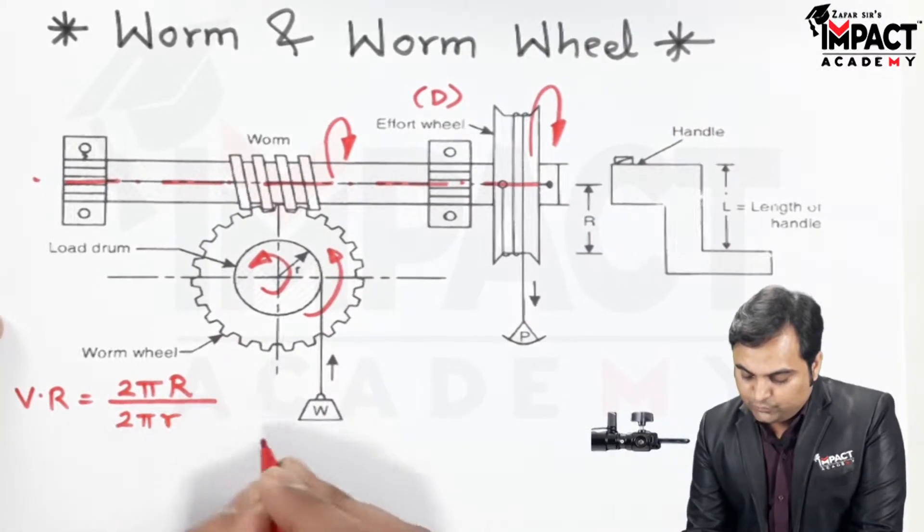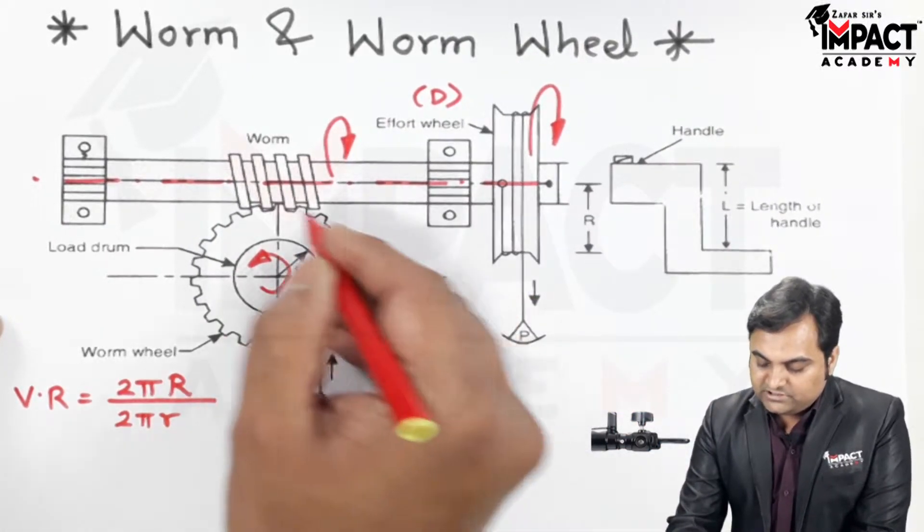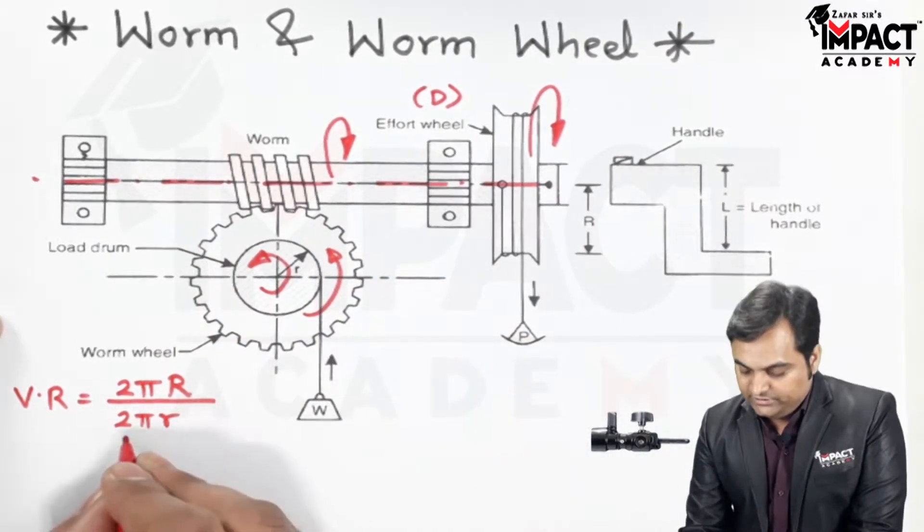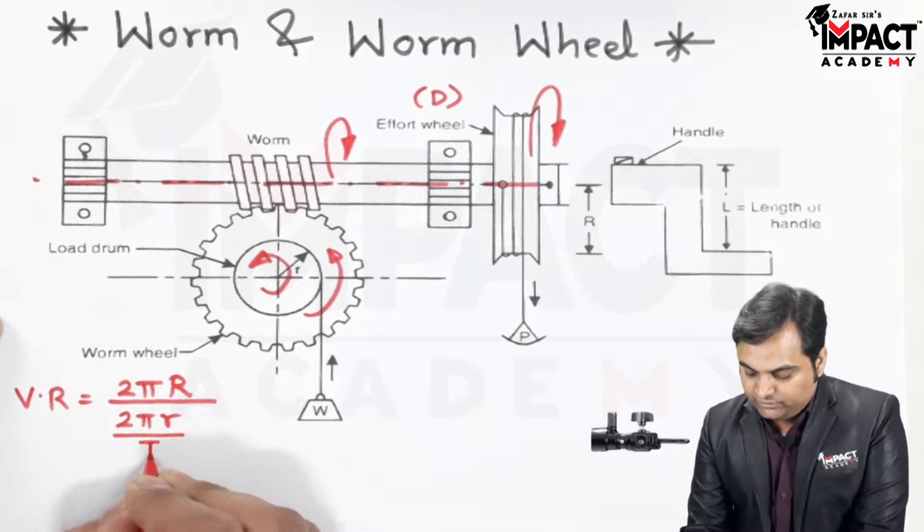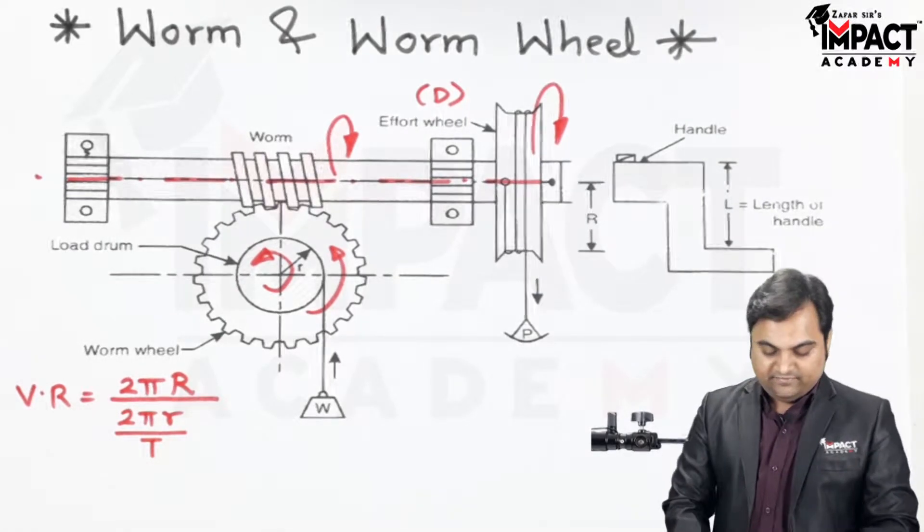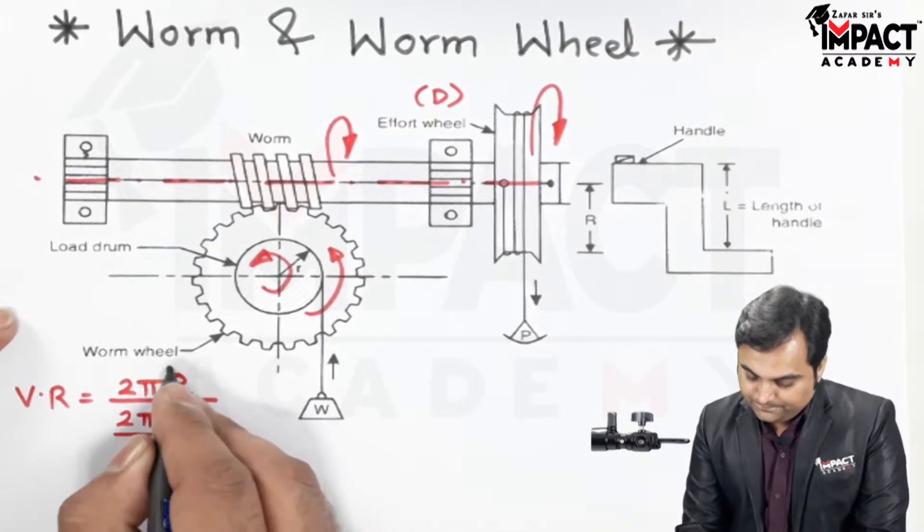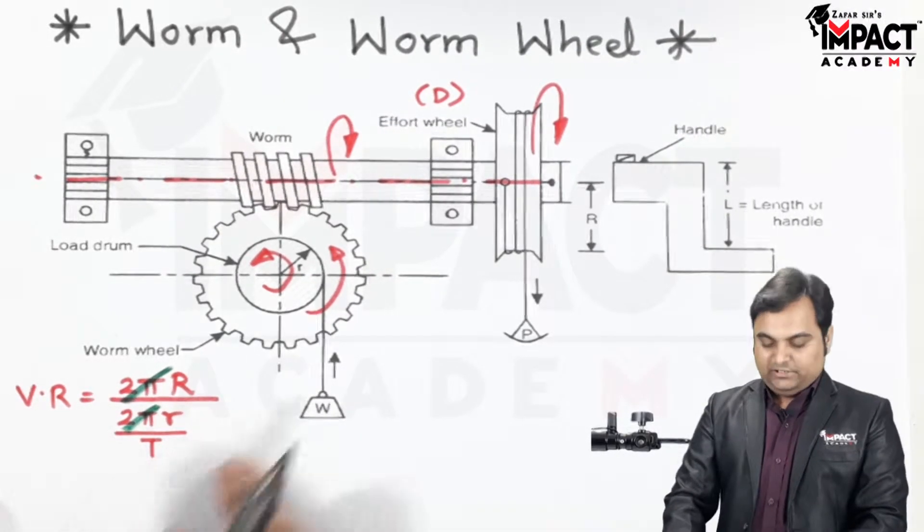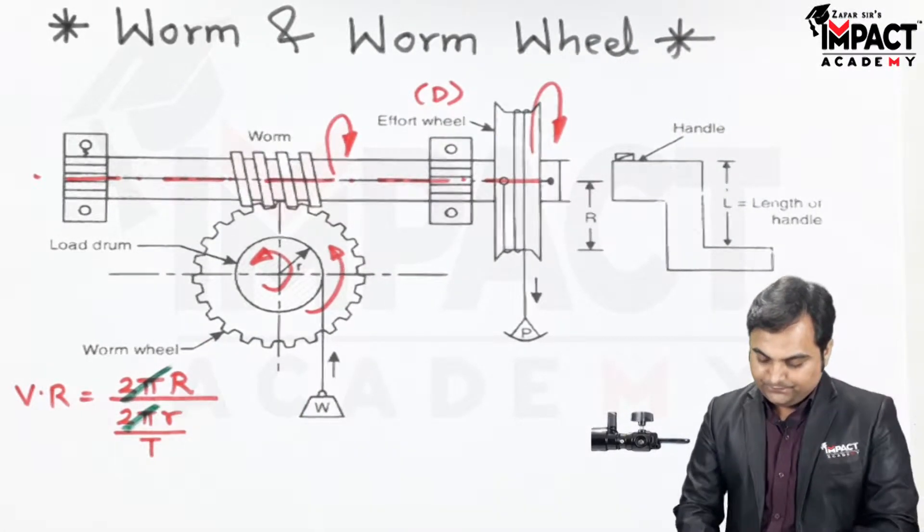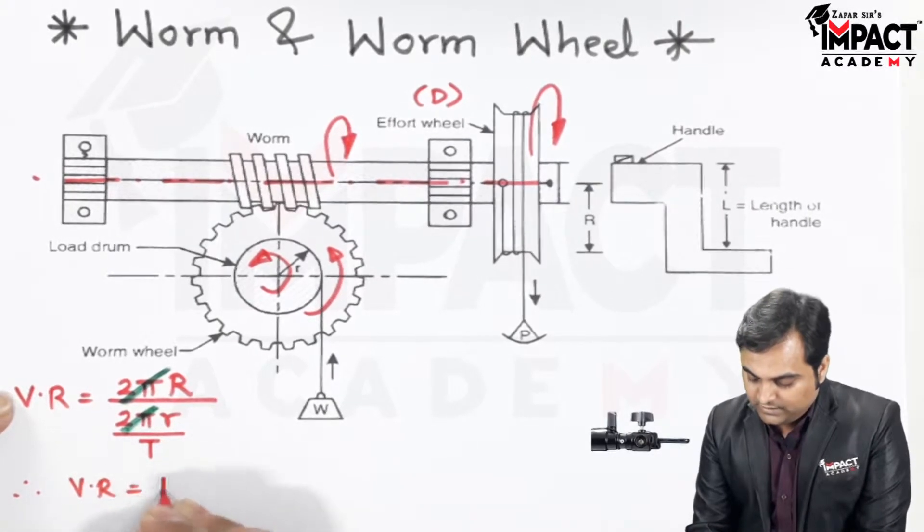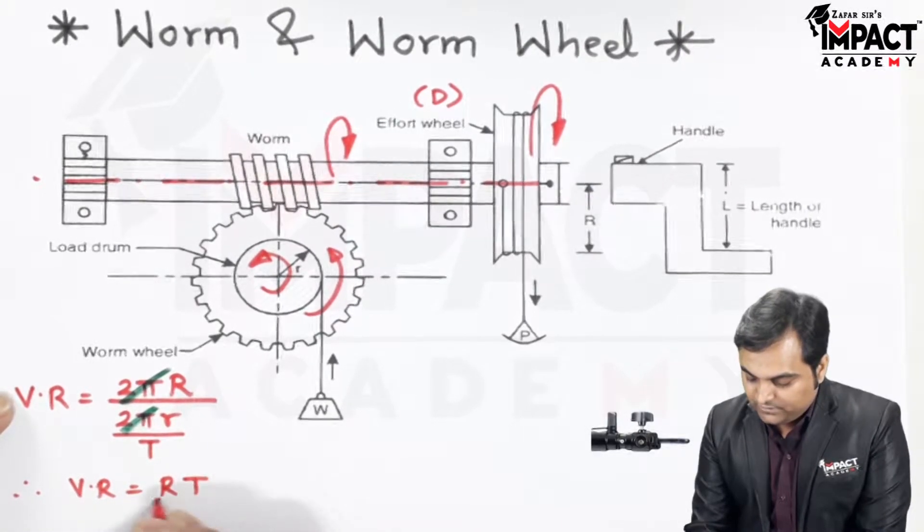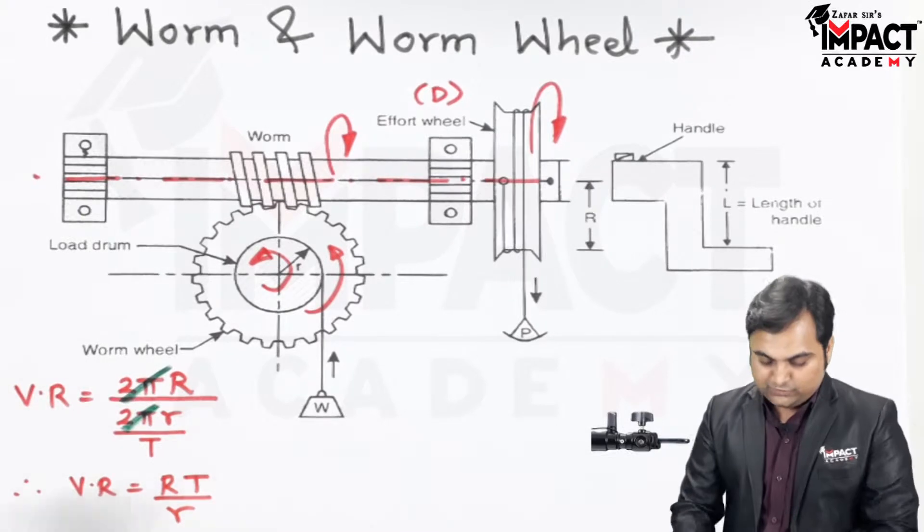times small r. Now the load drum is connected to the worm wheel, so in the denominator we have the number of teeth on the worm wheel. Finally, 2π and 2π will get cancelled and this capital T goes into the numerator, so the formula becomes R times capital T divided by small r.